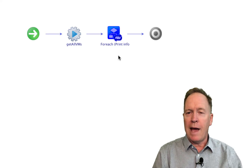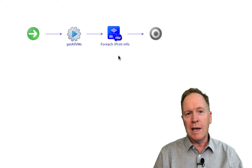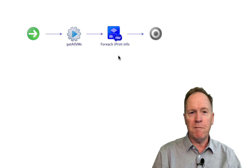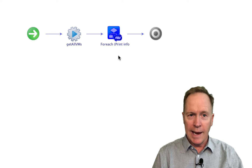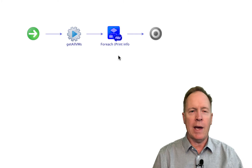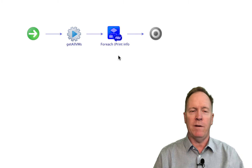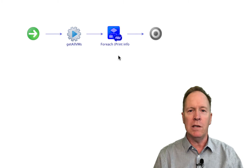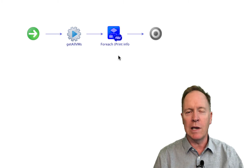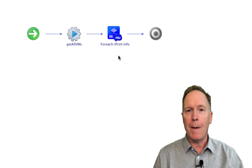That wraps up this video — video number 23. Video number 24 is related and also teaches you how to use the FOREACH loop schema element. But whereas in this video we used a single iterator, in the next video I'll show you how to set up multiple iterators. See you over in video number 24.